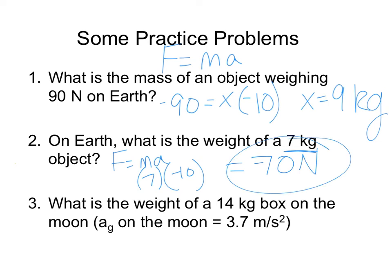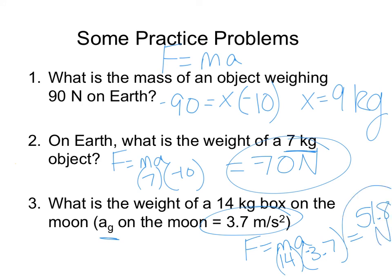And then last but not least, what is the weight of a 14 kilogram box on the moon if acceleration due to gravity on the moon is 3.7 meters per second squared. We've got our F equals MA equation. We know that we have a 14 kilogram box and it's going at 3.7 meters per second squared. Technically, it's a negative because it is going down. So, that means that our weight on the moon is 51.8 newtons and directionally, technically, it's negative because it's going down.